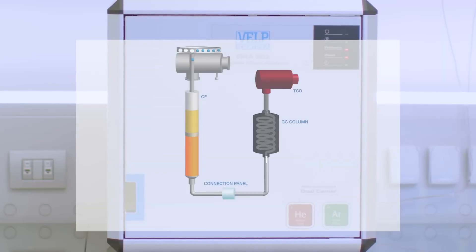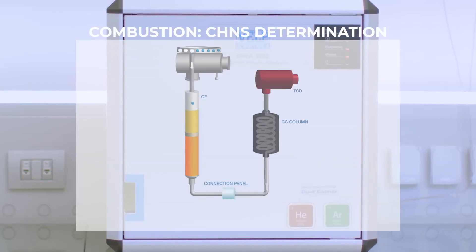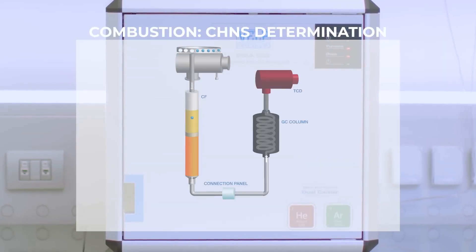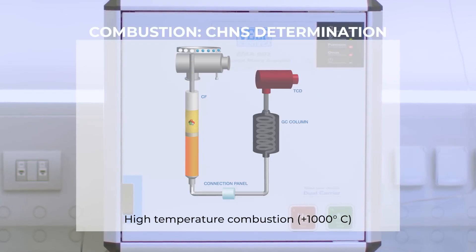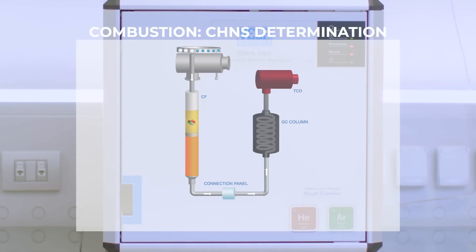The sample is purged with the carrier gas and drops down into the reactor. The CHNS analysis starts with the combustion of the sample at a temperature higher than 1000 degrees Celsius to obtain elemental compounds.